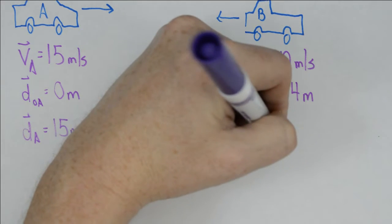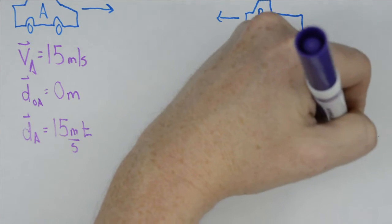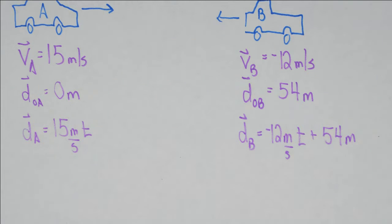So we have dA, this position is going to be 15 meters per second times time, and dB is going to be negative 12 meters per second times time plus 54 meters.